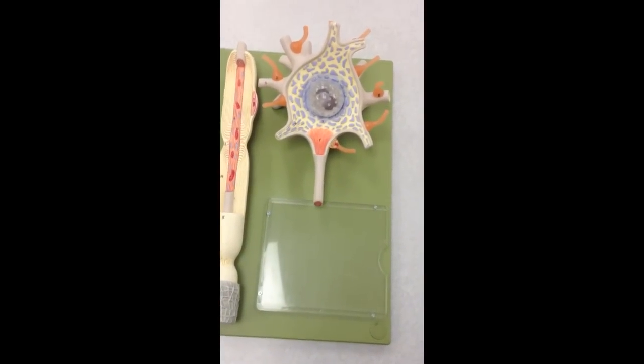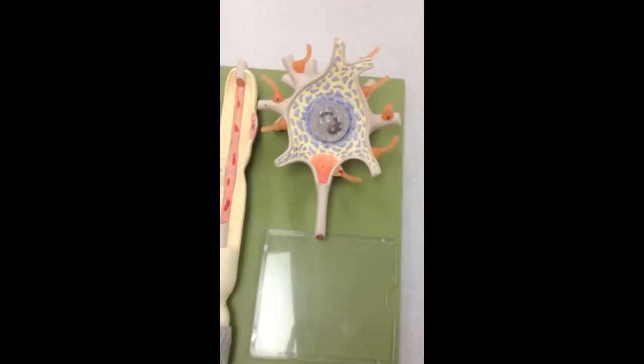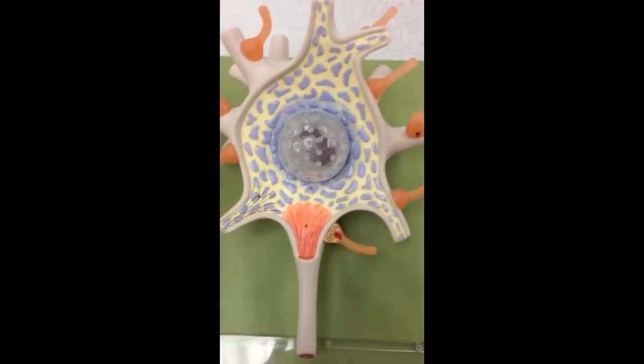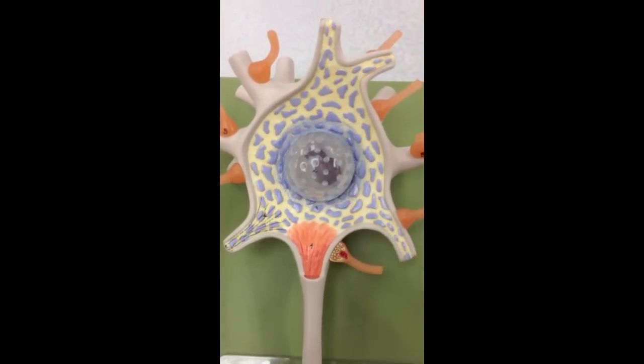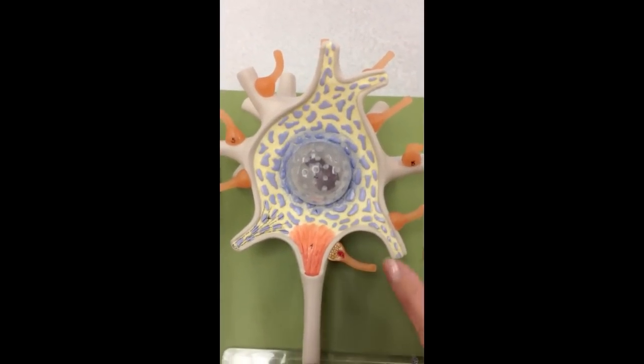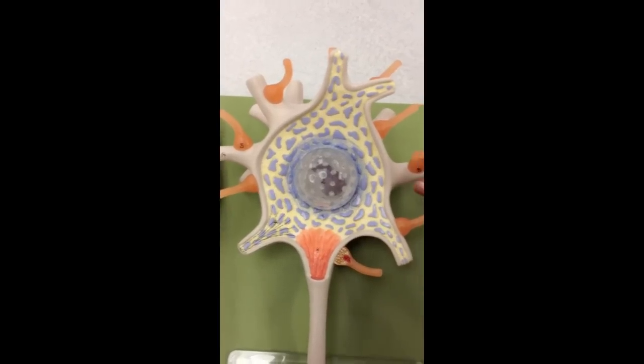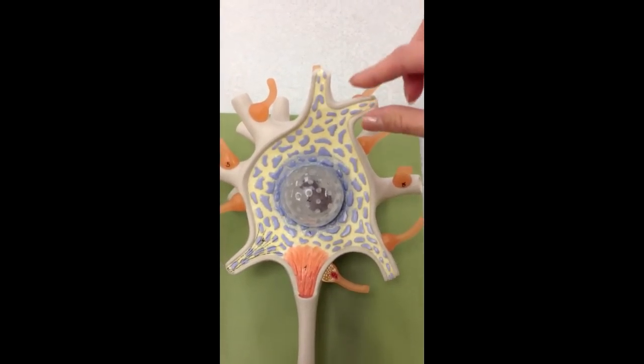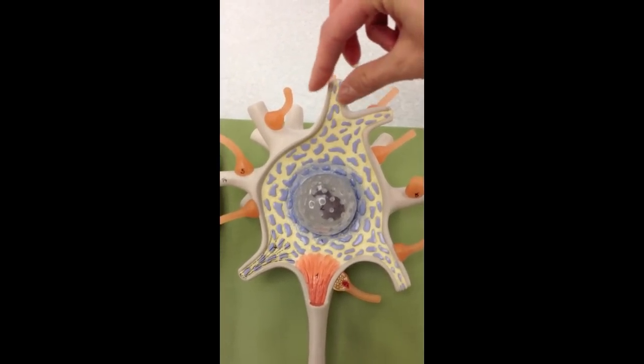We're going to take a look at the neuron model. I'm going to zoom in here. Right here, all of these gray projections, these are dendrites.